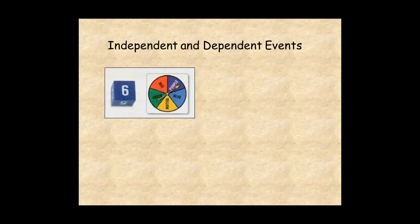In this example, you toss a dice and spin a spinner. The probability of tossing three or four is two over six, or one-third.